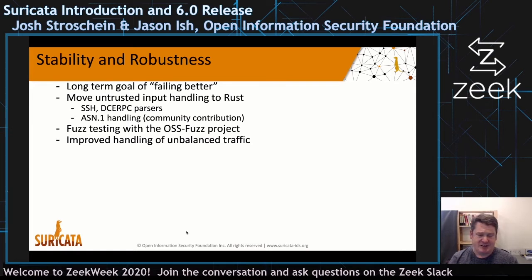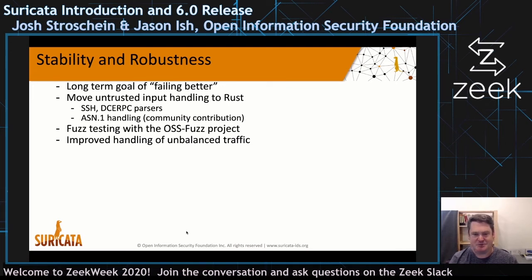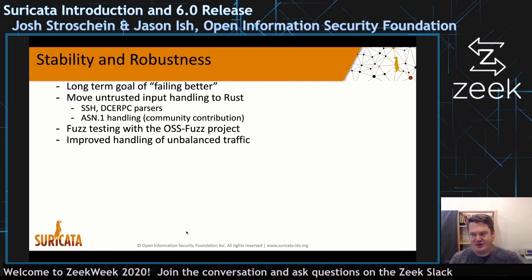We've joined the Google OSS Fuzz project, which continuously fuzzes our code on the master branch — we get the results and have to fix them because they get published publicly. We've also improved the handling of unbalanced traffic, such as when traffic is only seen in one direction.